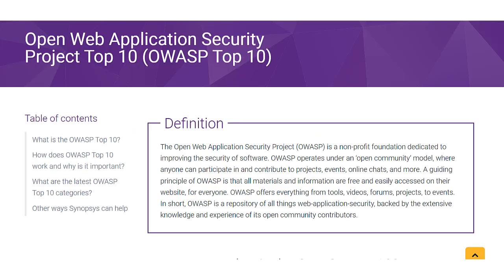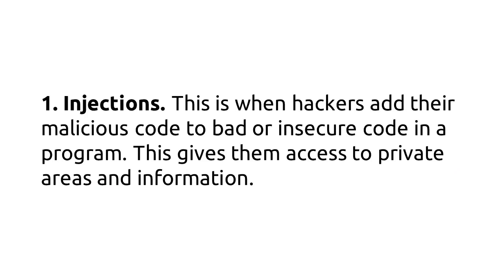What is OWASP Top 10? OWASP Top 10 is a list that ranks the most popular and critical security risks. It collects insights from security experts from across the globe to identify security defects that can be disastrous for an organization. This list helps you identify problems to look out for and outlines a few solutions.